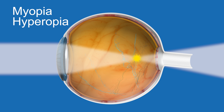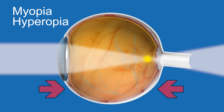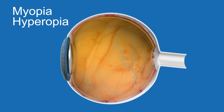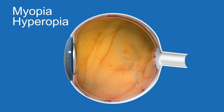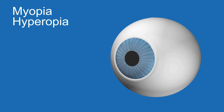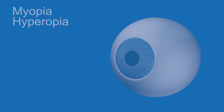Hyperopia, or farsightedness, is the opposite of myopia. This occurs when the eyeball develops slightly shorter than normal, or when the curve of the cornea is too flat. This causes the light entering the eye to come to a focus behind the retina, which results in blurred near vision. For those with higher hyperopic prescriptions, the distance vision may also be blurred.